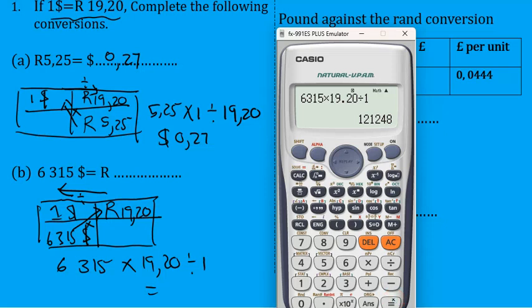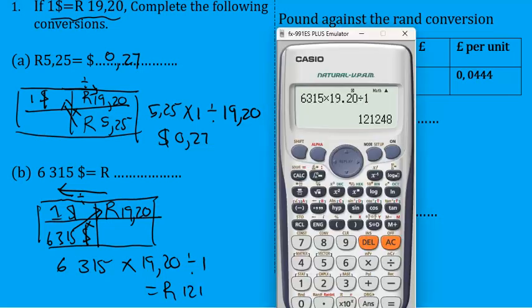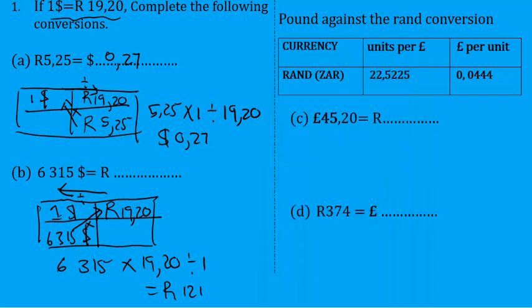So this will be 121,248 rands. When we exchange those dollars to rands, we'll get R121,248.